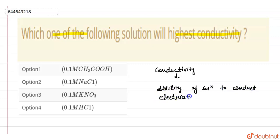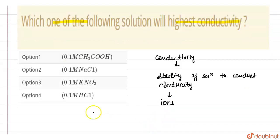And electricity is conducted due to the presence of ions. More is the number of ions, moving ions, or we can also say mobility of ions, more is the conductivity of the solution.